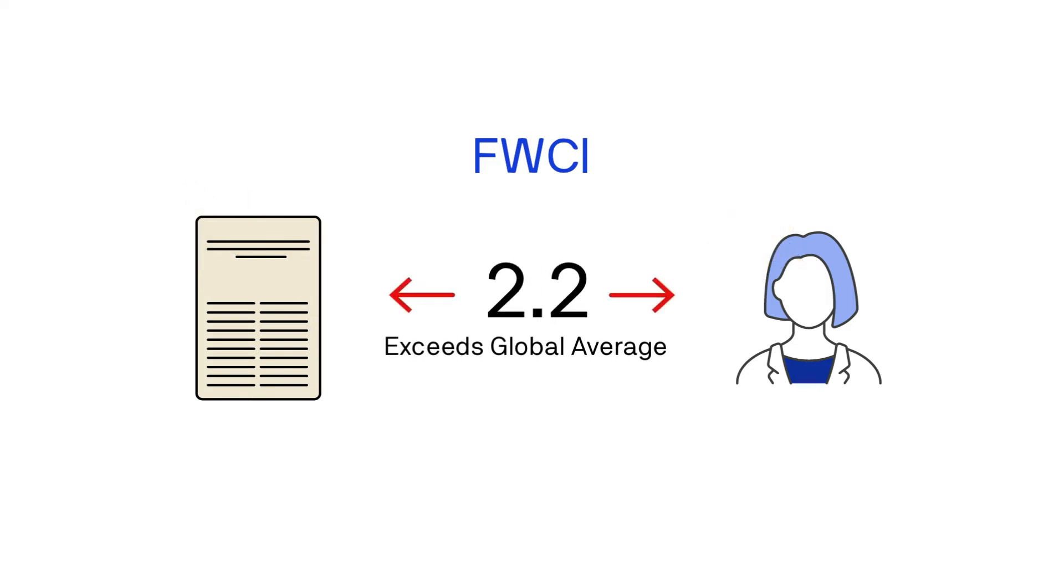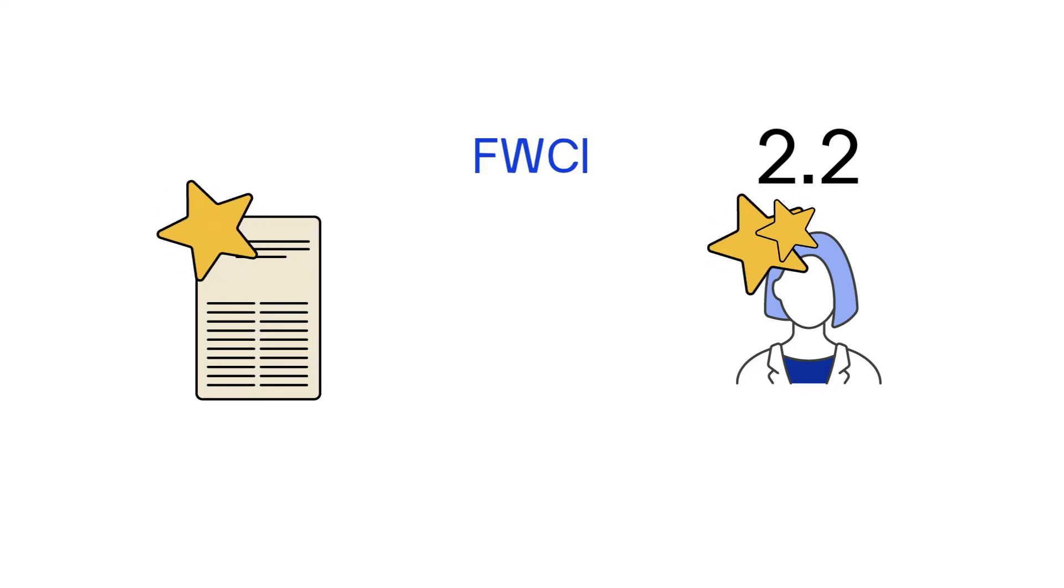More than 1 would mean their output is higher than the global average. For example, Jane's FWCI of 2.2 means that her article has been cited 120% more than the average in her field.